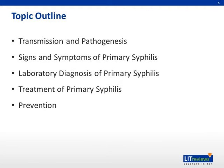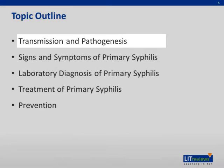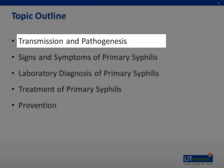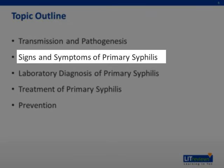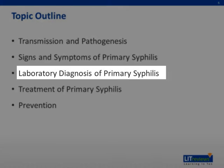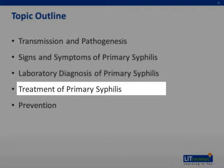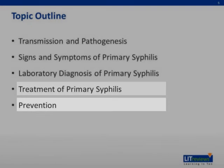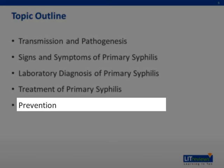The topic outline is as follows: transmission and pathogenesis, signs and symptoms of primary syphilis, laboratory diagnosis of primary syphilis, treatment of primary syphilis, and finally prevention.